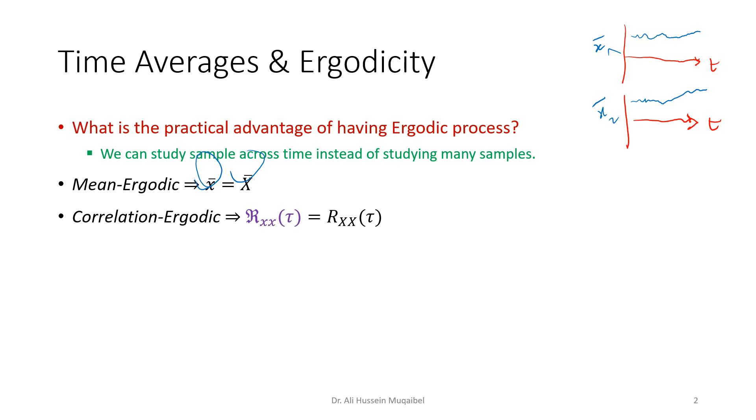If you continue with correlation-ergodic, again, if the time auto-correlation equals the correlation of the random process, we call it correlation-ergodic. If both these conditions are true, which means mean-ergodic and correlation-ergodic, then we can say it's just ergodic. When we say ergodic, we mean two things at the same time.